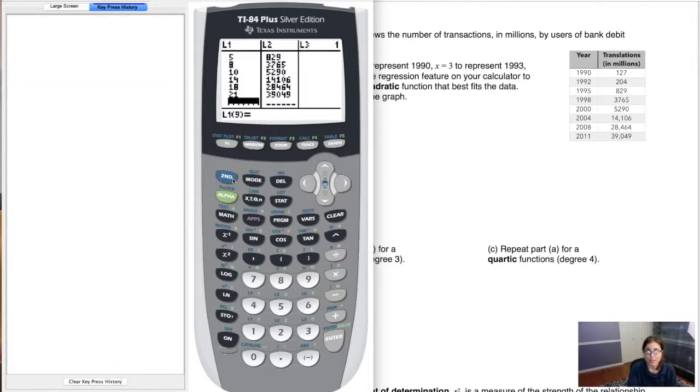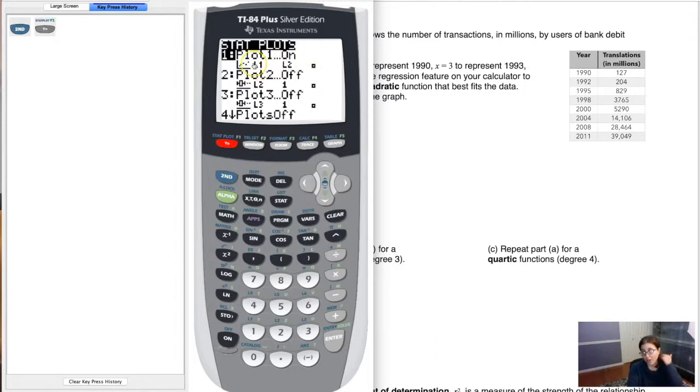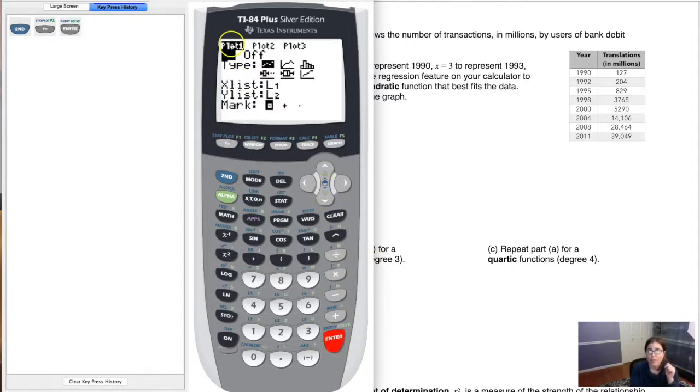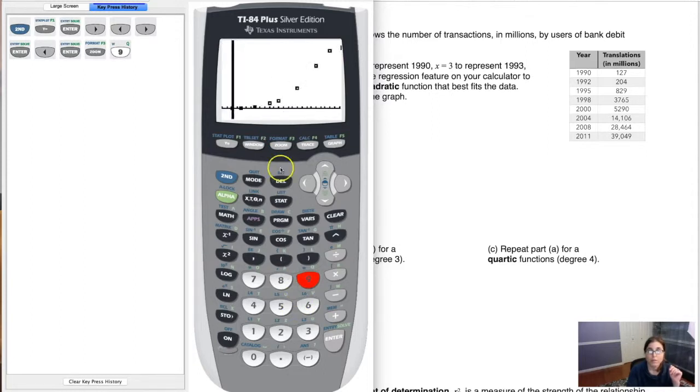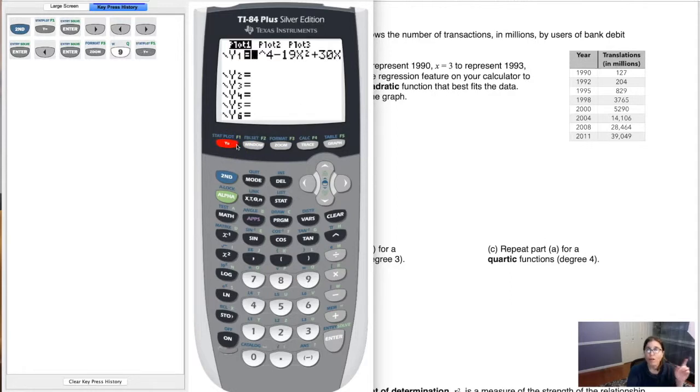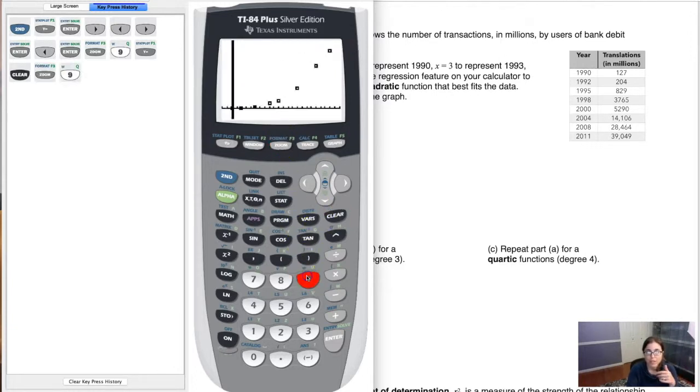Whenever you want to make a stat plot, two buttons - second Y equals. I just did that intentionally so I could show you that dimension mismatch error. You can toggle between on and off by just hovering over one and hitting enter. So now my plot is off. I'm going to turn it back on. Once it's ready to go, let's hit zoom nine. I've got some function going through there. I had just come off of doing example three on my calculator. Let me clear this out and hit zoom nine. Now I have just the scatter plot. It does look like a parabola or at least some kind of curve.